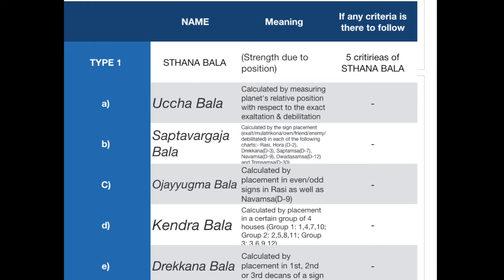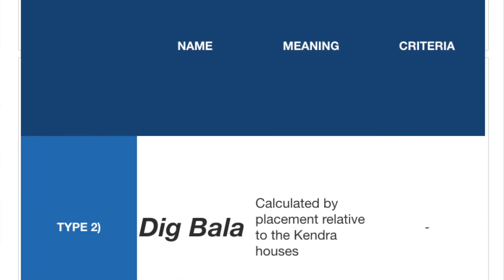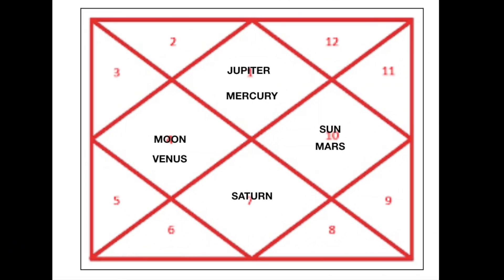Drachana Bala refers to strength according to a planet's decan placement relative to another planet. For example, if Sun is placed in the first house and Mercury is placed in the second house, that relationship defines the Drachana Bala. Now coming to the second type of Shat Bala — Dig Bala. Most people may know about Dig Bala. It is calculated by placement relative to the Kendra houses in the birth chart.